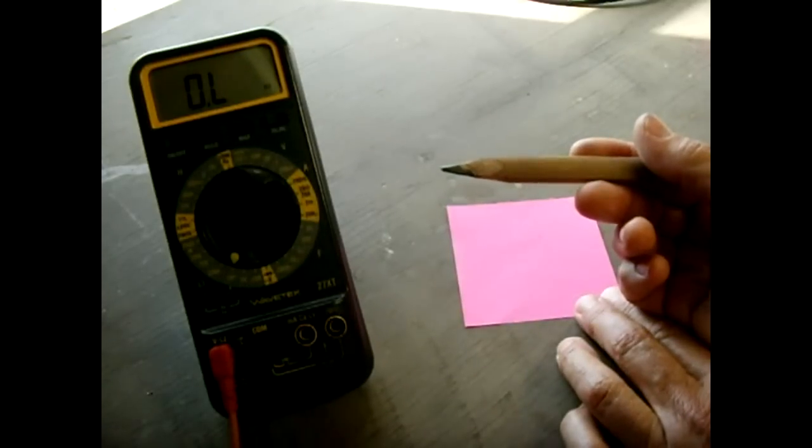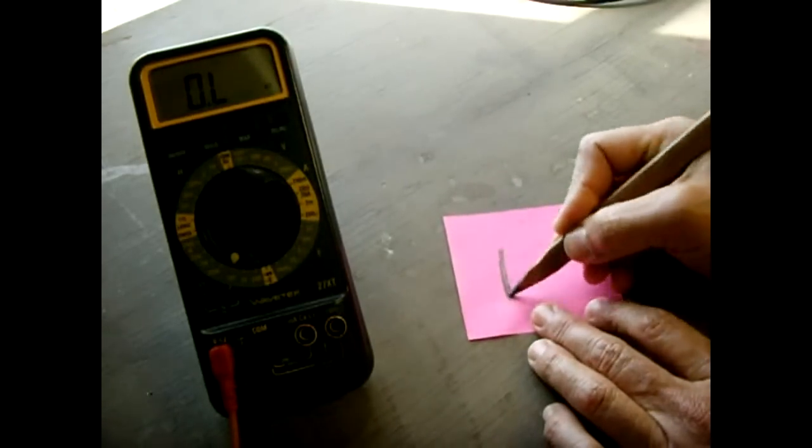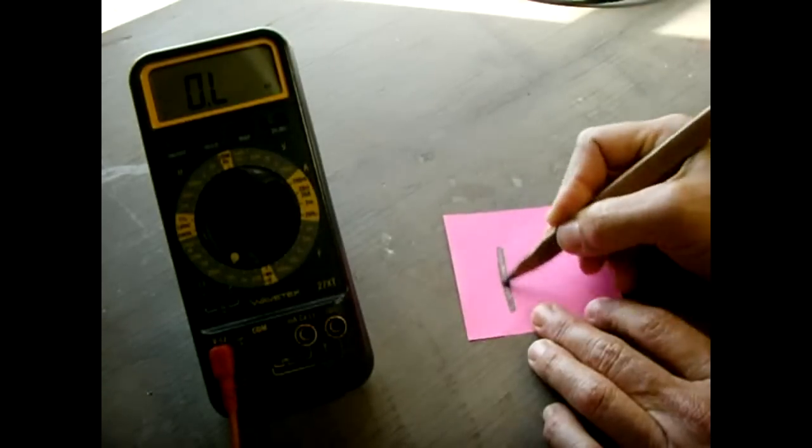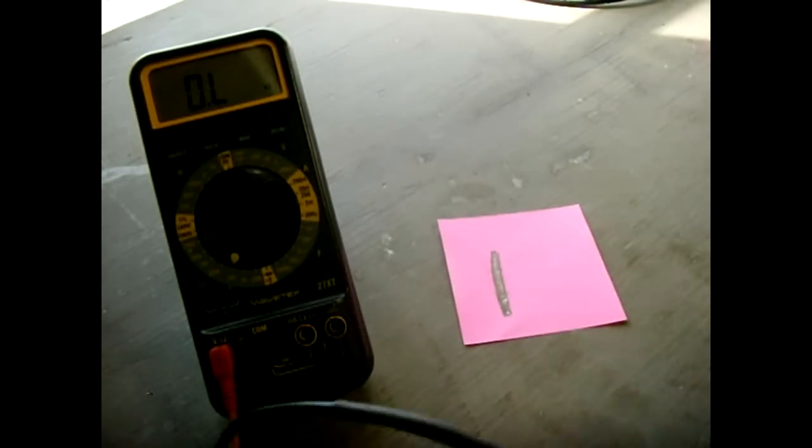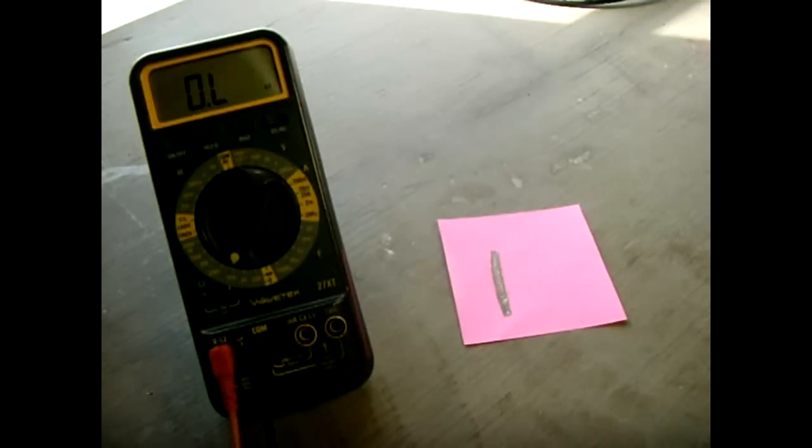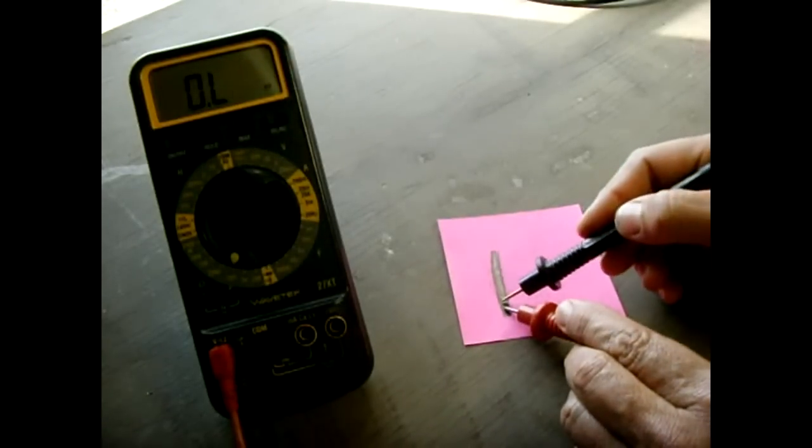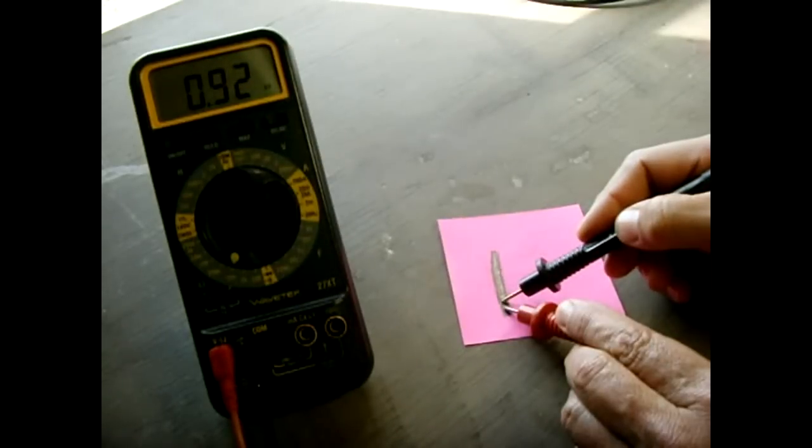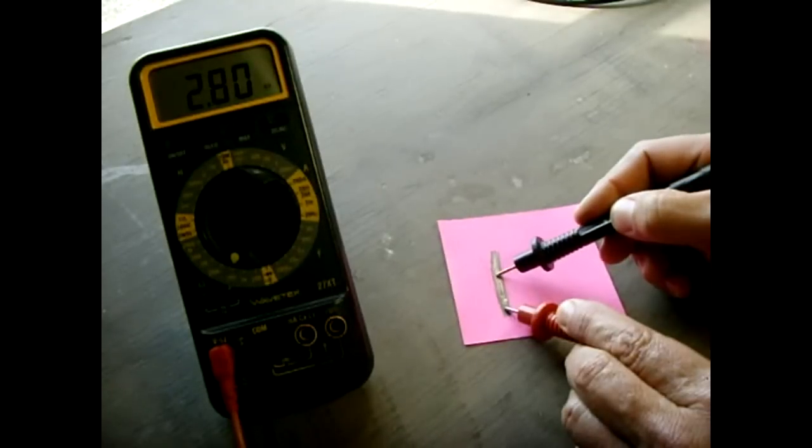The carpenter's pencil is made out of graphite. So what I'm going to do is make a nice line. All right. Take my two test probes. I can touch one here and I'll touch it close there. And you can see we have just under 1,000 ohms. And the further away I move, you can see the resistance value going higher and higher.